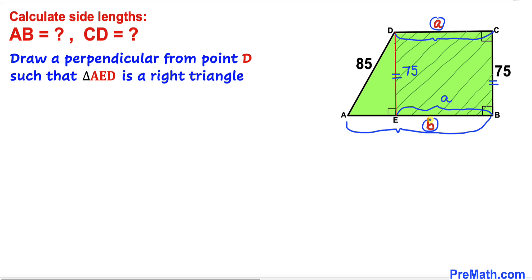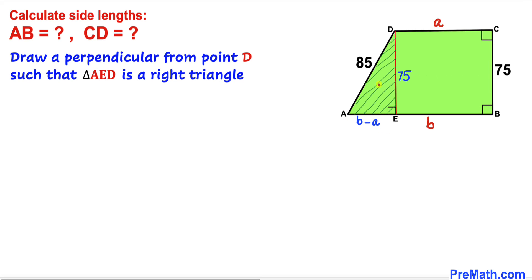Since the whole length AB is b units, side length AE is going to be b minus a. So this side length AE equals b minus a.